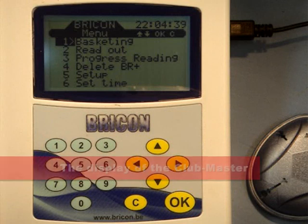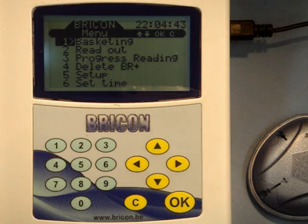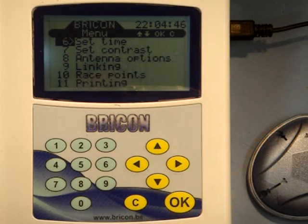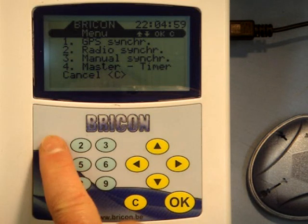To synchronize the time within the master with the GPS time signal, you select menu option number six, which is set time, and then press OK. The display will give you the option of one GPS synchronization or two radio synchronization, and as you are using the GPS receiver, you select option number one.